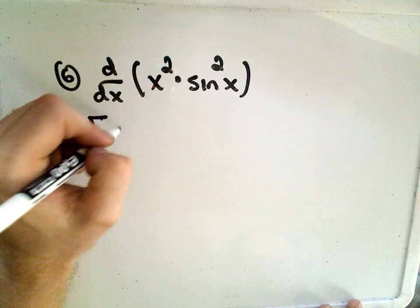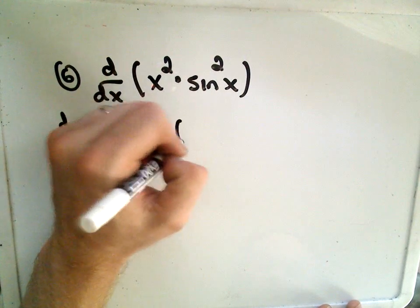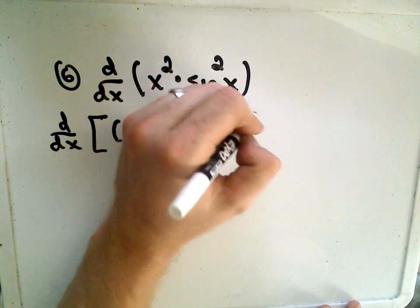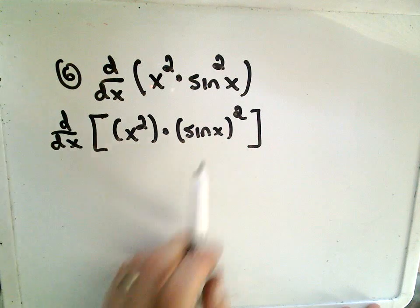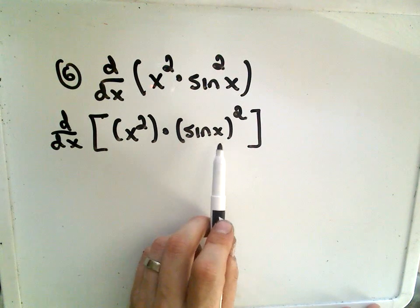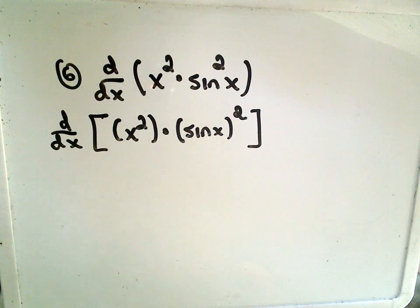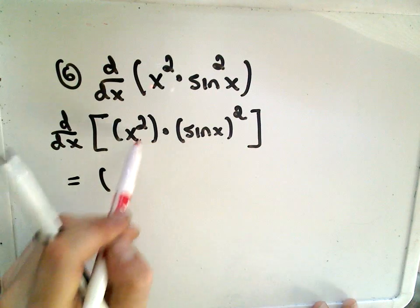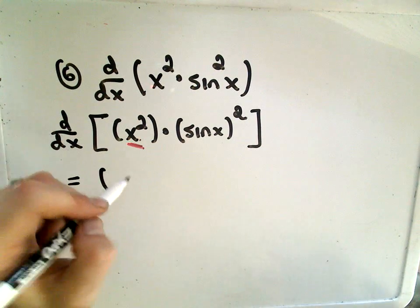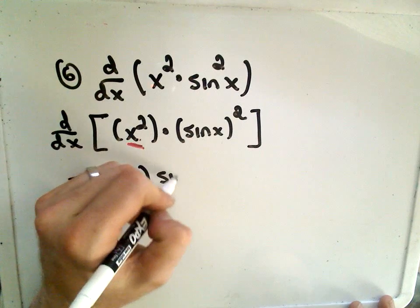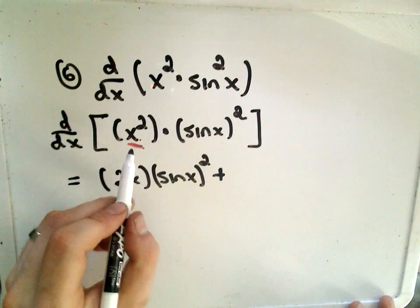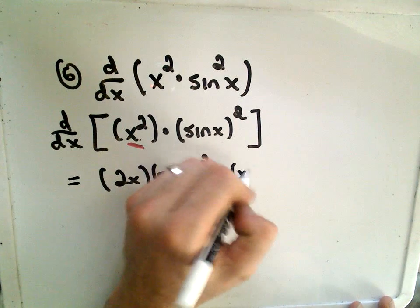So we're finding the derivative of x squared. The other function, I can write sine squared of x as sine x quantity squared. So that's an equivalent way of writing it. And I like to see it this way just because it reminds me again to use the chain rule. So here we're going to have to use both the product rule and the chain rule. So if we take the derivative, the derivative of the x squared part, we'll just get 2x. Let's leave the sine x quantity squared alone.